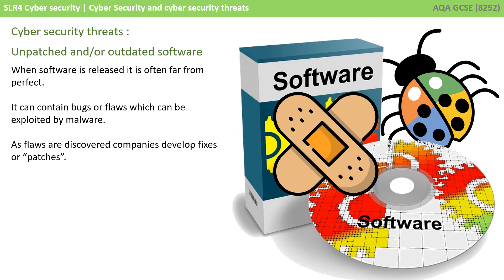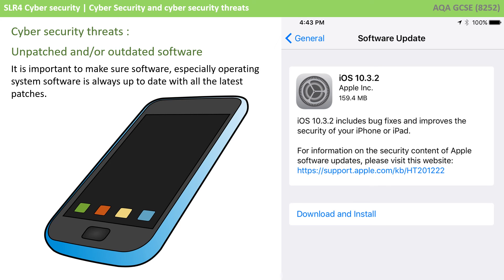The last threat to consider is unpatched or out of date software. When software is released it's often far from perfect — it contains bugs or flaws which can be exploited by malware. This may seem unusual, but if we take something like Windows 10, that contains billions of lines of code. Despite the most experienced team of developers and testers and extensive testing processes, software will undoubtedly have bugs or flaws which won't be discovered until it's released to the community. As flaws are discovered, companies develop fixes or patches. It's really important to make sure software,